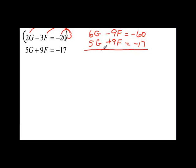When I add these two equations, I get 6g plus 5g is 11g. Then my 9f and negative 9f cancel each other out. And then negative 60 plus negative 17 would be negative 77. When I divide by 11, I find out that g is equal to negative 7.